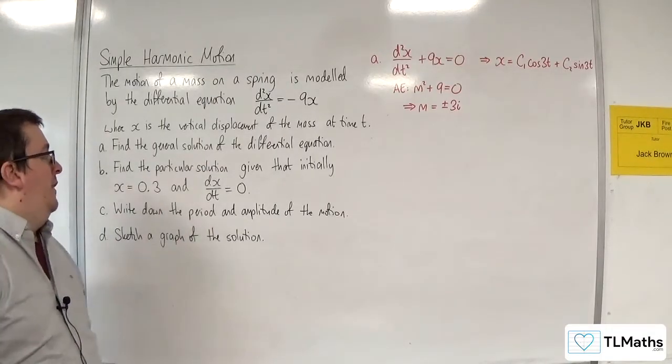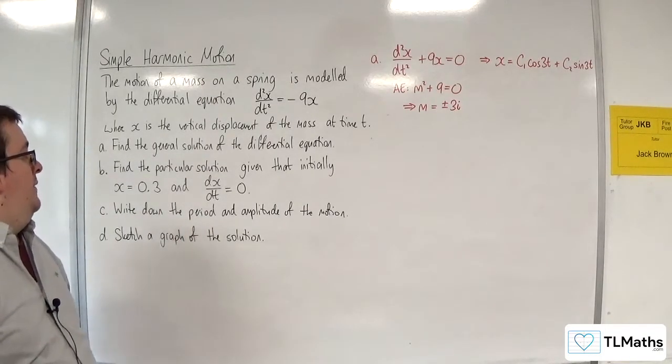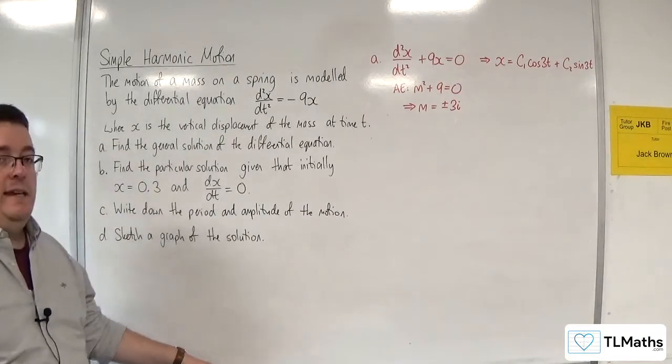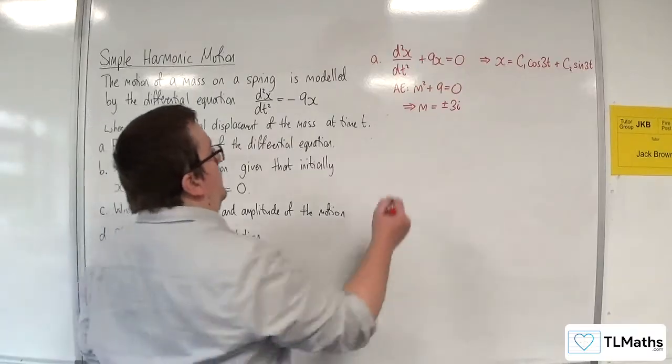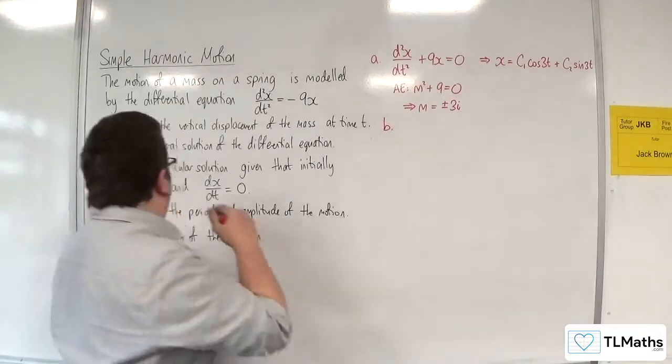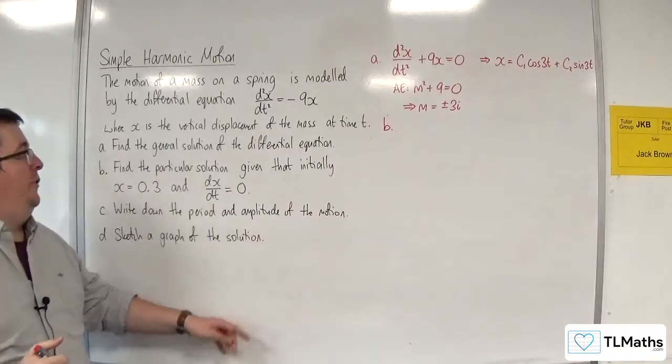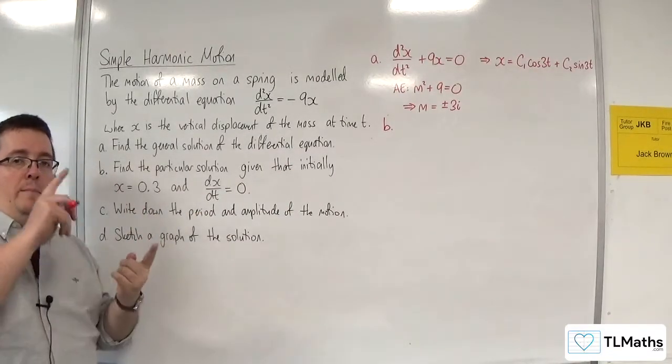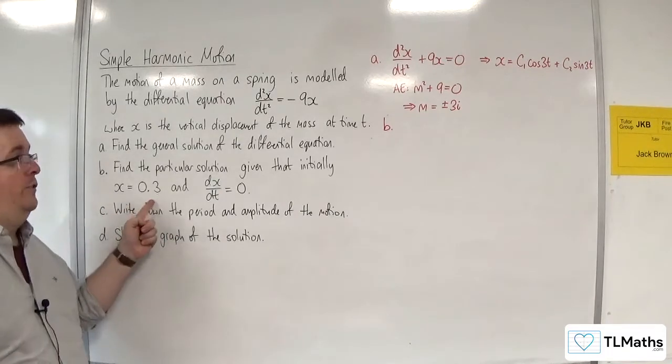Part B, find the particular solution, given that initially x equals 0.3, and dx by dt is equal to 0. So because it tells me that initially x is equal to 0.3, that means that when t is 0, x is 0.3.